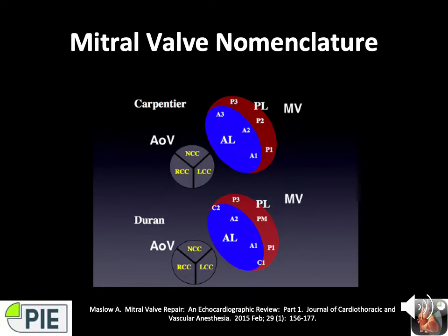In the Duran system, everything is named according to its attachment to the papillary muscles. Everything with a 1 — C1, P1, A1 — attaches to the anterolateral papillary, and everything with a 2 — C2, P2, A2 — attaches to the posteromedial papillary.